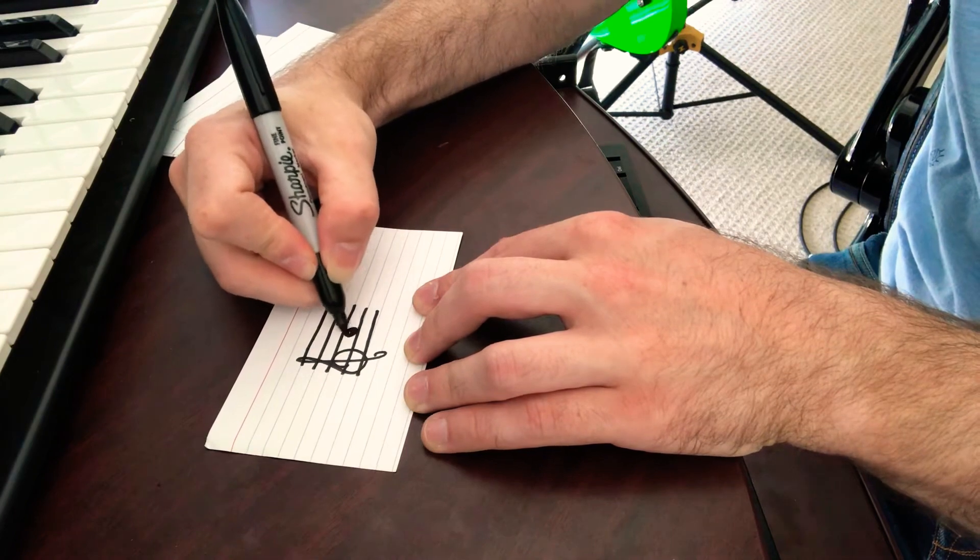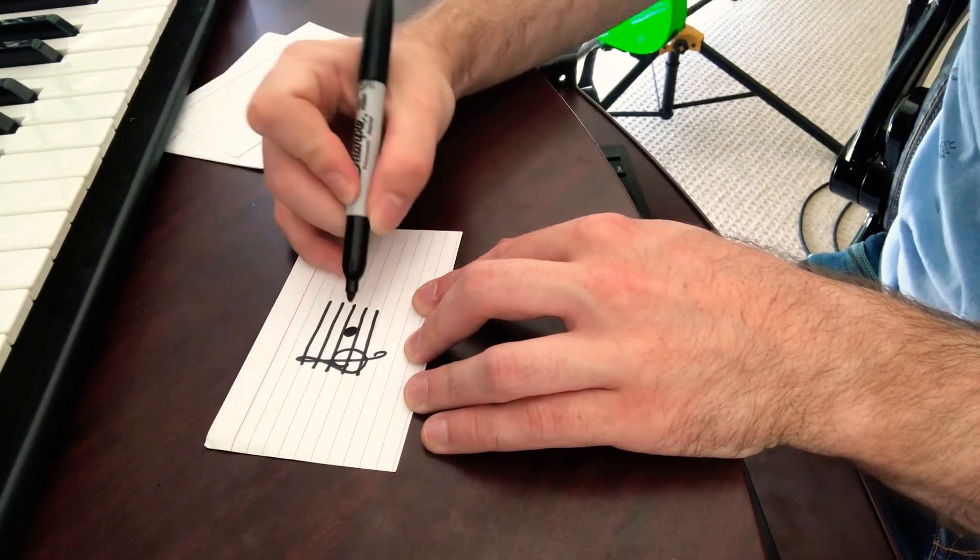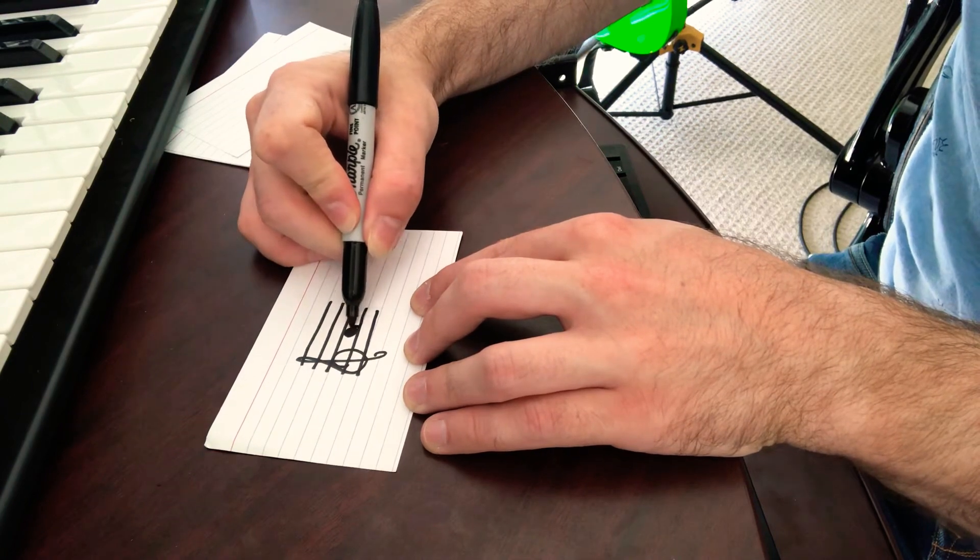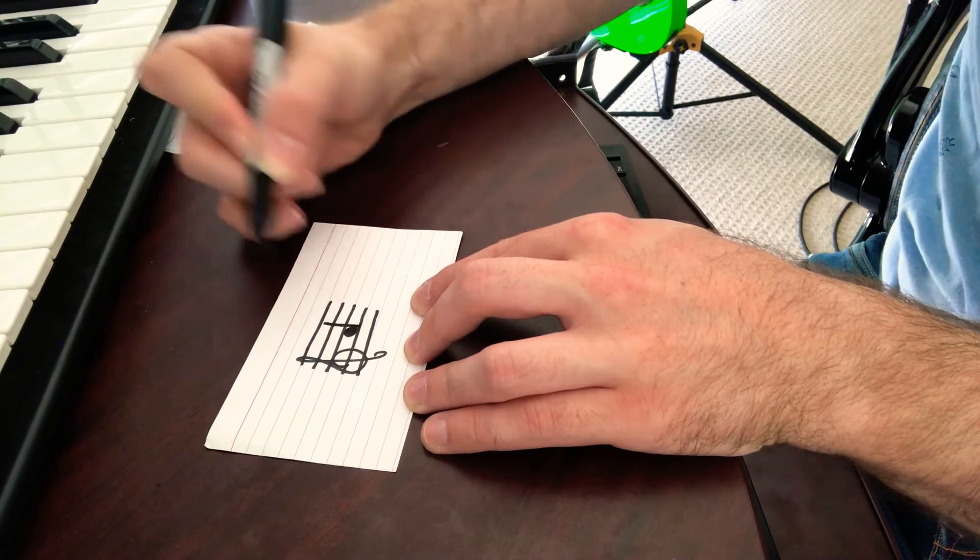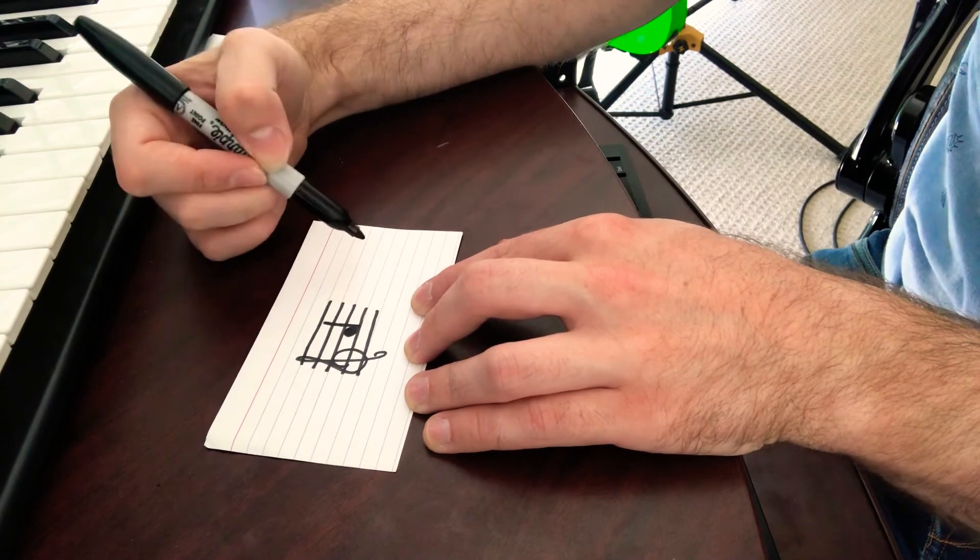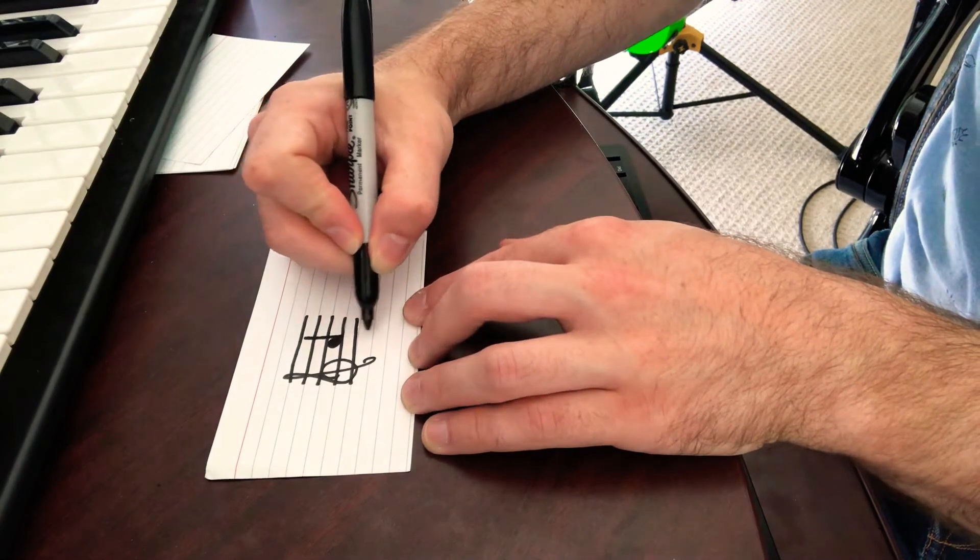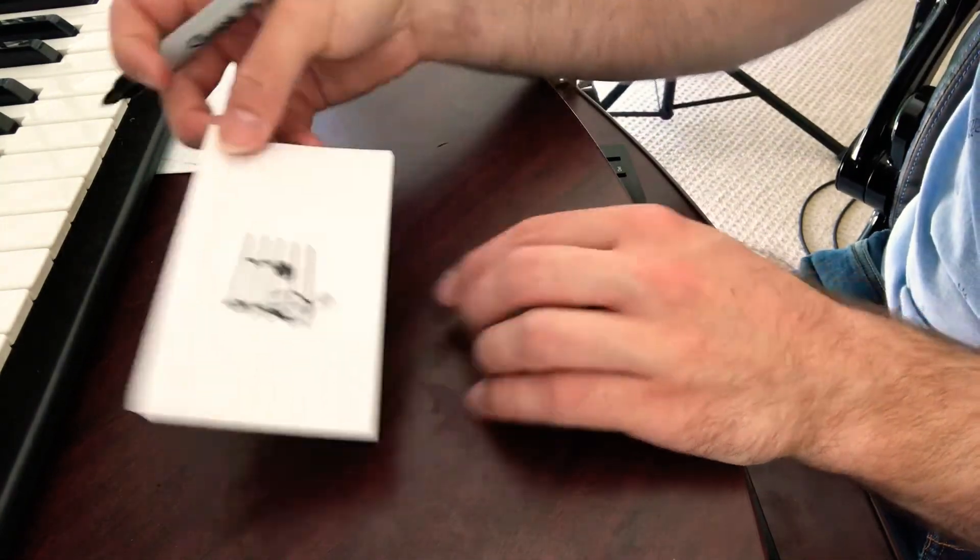So when you get to A, same as true on the bass clef, when you get to this space here, your stem switches sides, and it goes up about two lines again, and you could stop about halfway through that third space there, or that second space away from where you started. And all of the notes that go after this are going to have up stems, so you have to watch out for that.